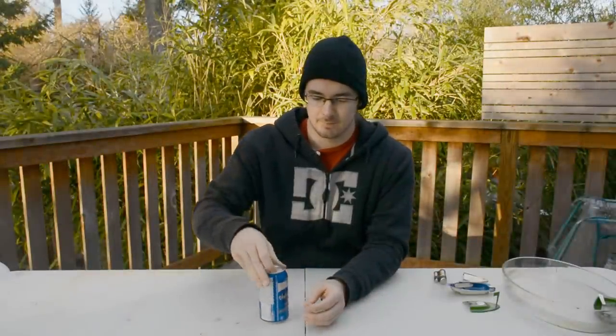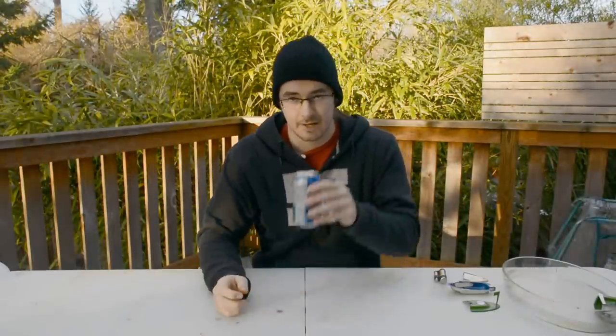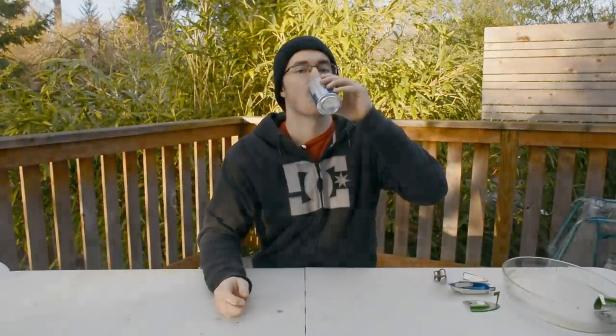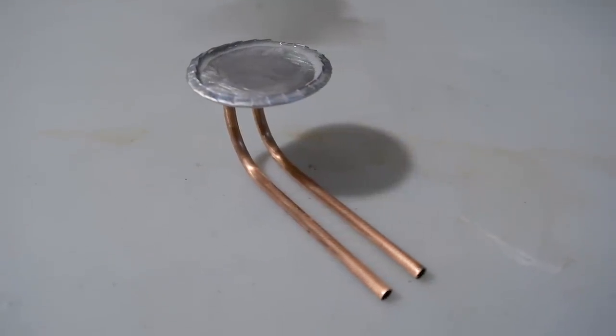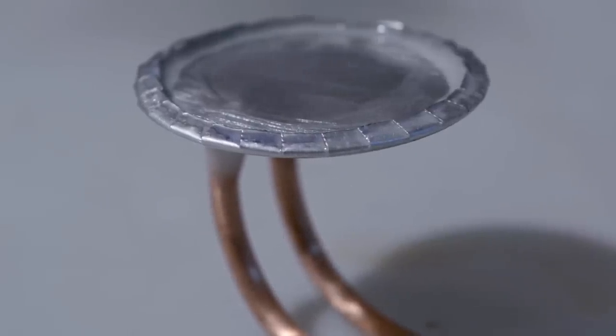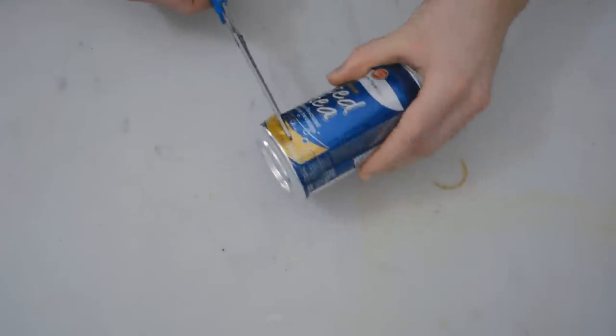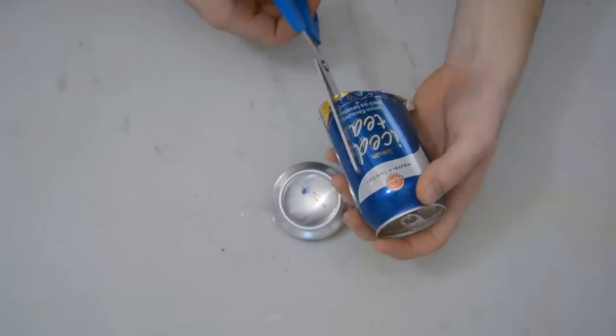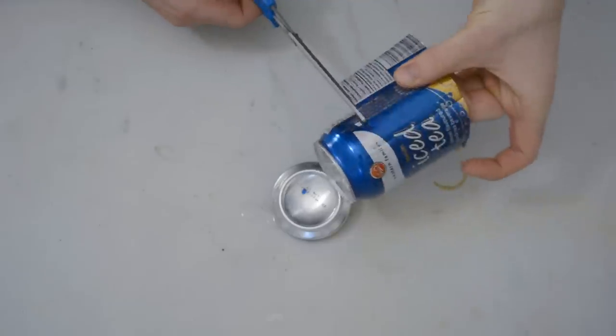First thing you're going to do, take a can of pop or beer, open it up and drink it. This aluminum can, along with some small copper tubing and five minute epoxy, will become the boiler of our boat. We're going to start by cutting off the bottom of the can, and then also cutting out a small square from the side of the can.